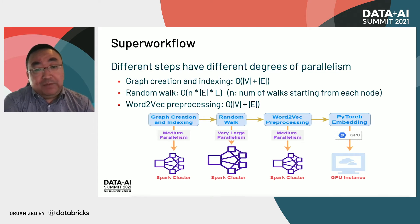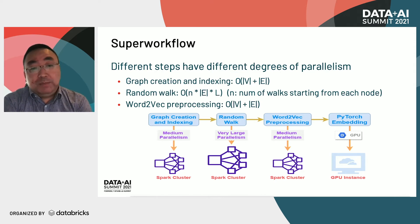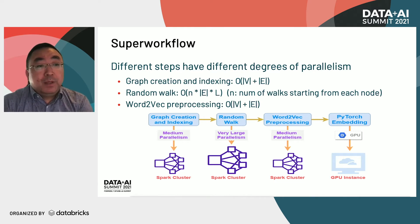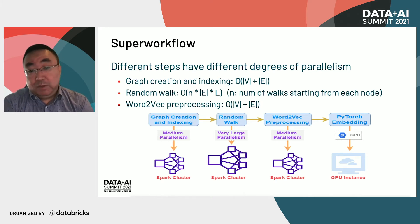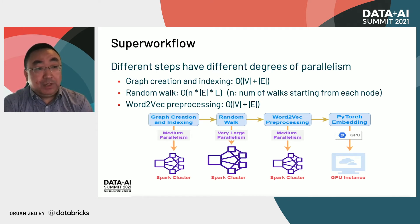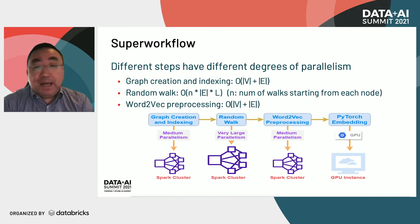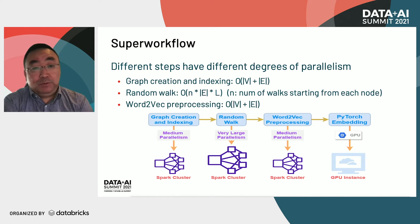This diagram summarizes the super workflow of node2vec. The graph creation and indexing step require a medium-sized Spark cluster with maybe a couple hundred cores. The random walk step will require a substantially bigger cluster with over a thousand cores. The word2vec preprocessing will require a medium-sized cluster with around one to two hundred cores.